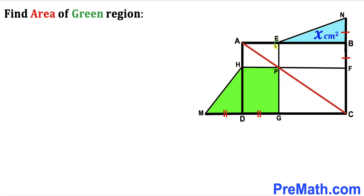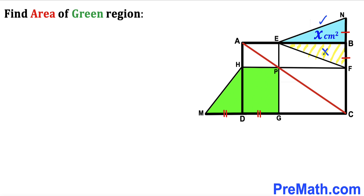Let me connect point E with point F. As a result we get triangle EBF, and we can see that the blue triangle and the yellow triangle are congruent, since their bases are the same and their height EBF is the same as well. The area of the blue triangle is X, therefore the area of the yellow triangle is X centimeter square as well.